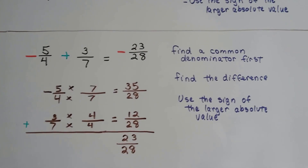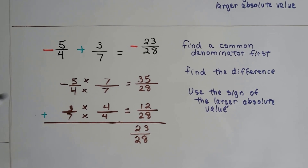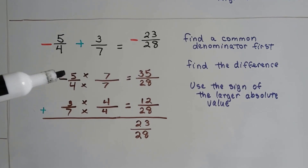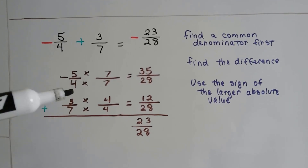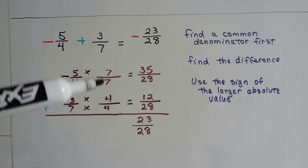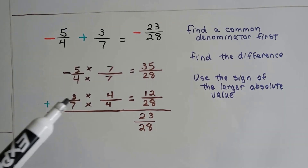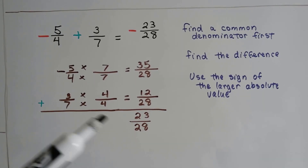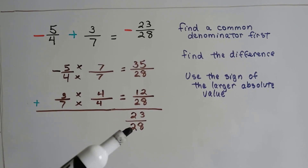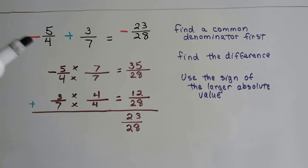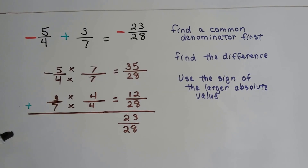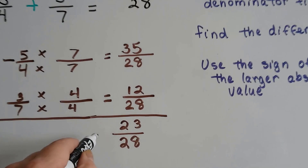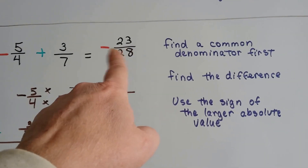When we have fractions, sometimes we might have to find a common denominator first. The 4 and 7 can meet at 28. We multiplied the numerator and denominator of the negative 5 fourths by 7 over 7, and the 3 sevenths by 4 over 4 to get that common denominator. Now we see the difference between them is 23 twenty-eighths. We take the sign of the greater absolute value — 35 over 28. That was a negative, so our answer is going to be a negative 23 twenty-eighths.